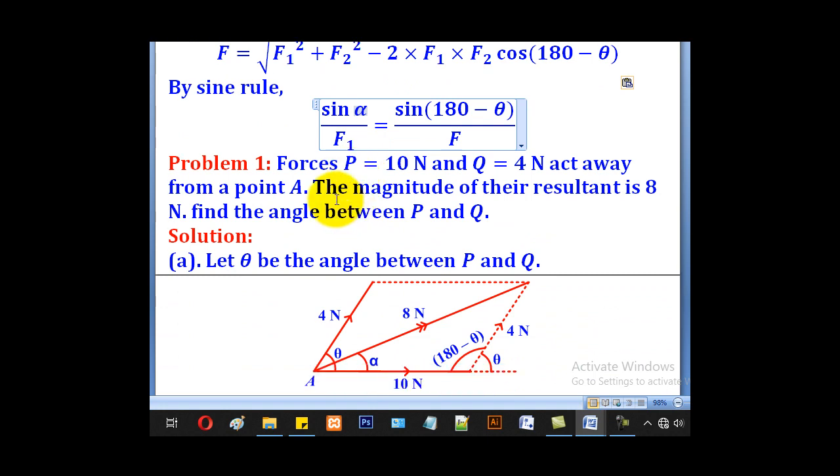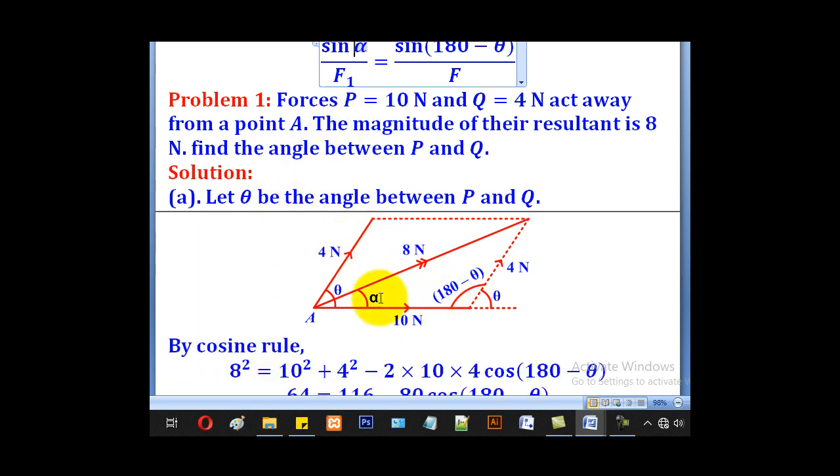So we shall use that knowledge to solve this problem. Forces P equal to 10 newtons and Q equal to 4 newtons act away from a point A. The magnitude of their resultant is 8 newtons. Find the angle between P and Q. So we shall first draw P which is 10 and Q which is 4. Then we will complete our parallelogram.